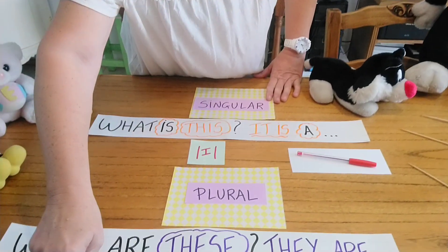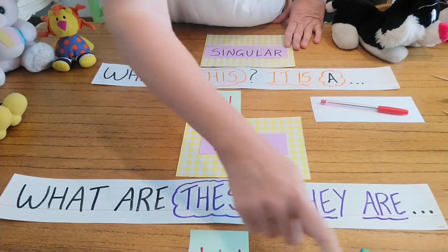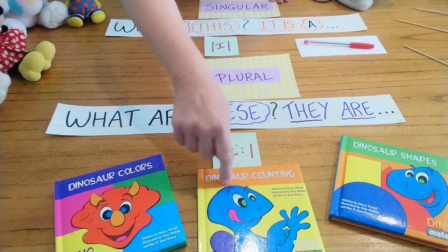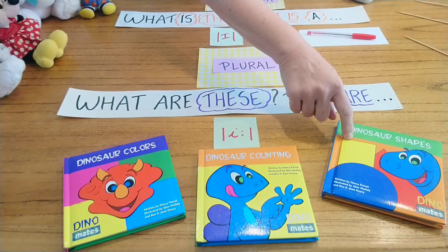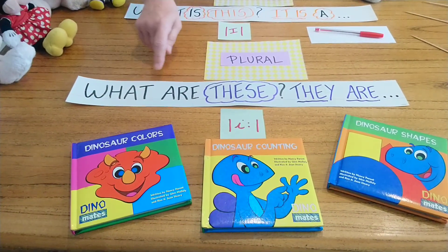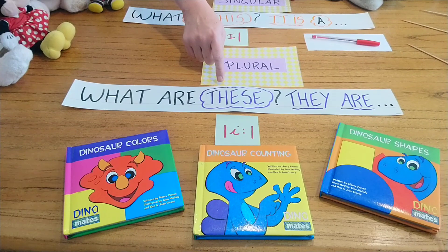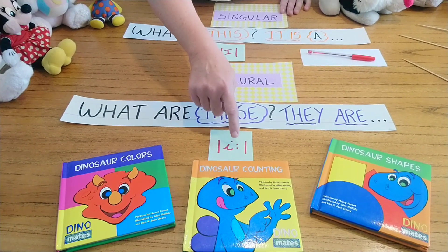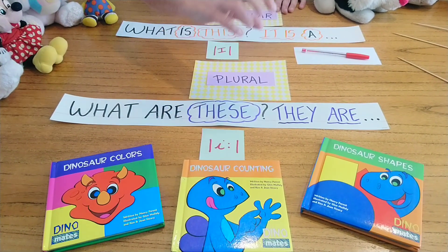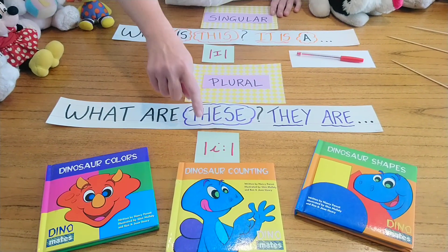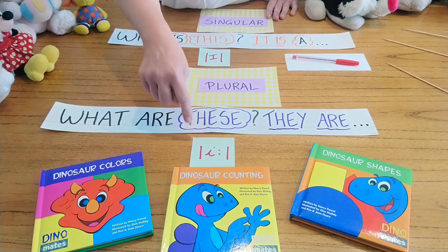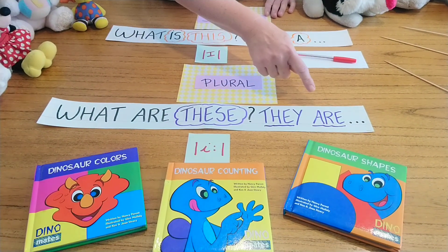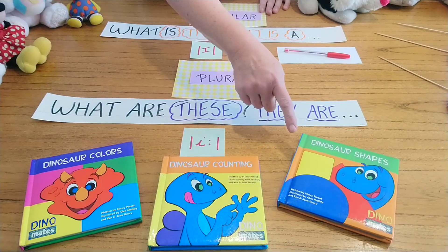Now, suppose you want to ask about many things — one, two, three. 'What are these?' Long E. This means that the sound is long. 'What are these?' 'They are books.'